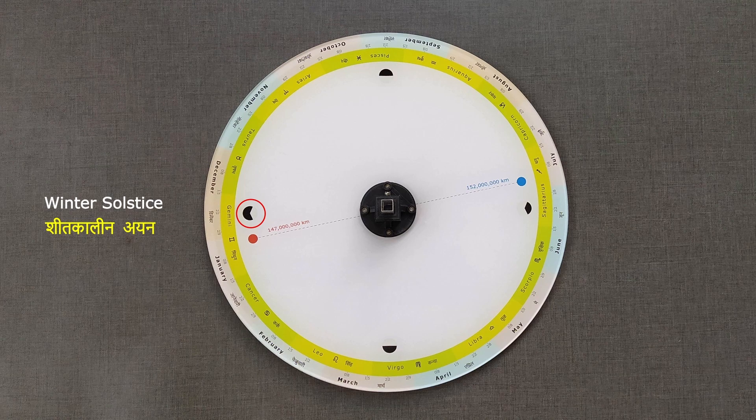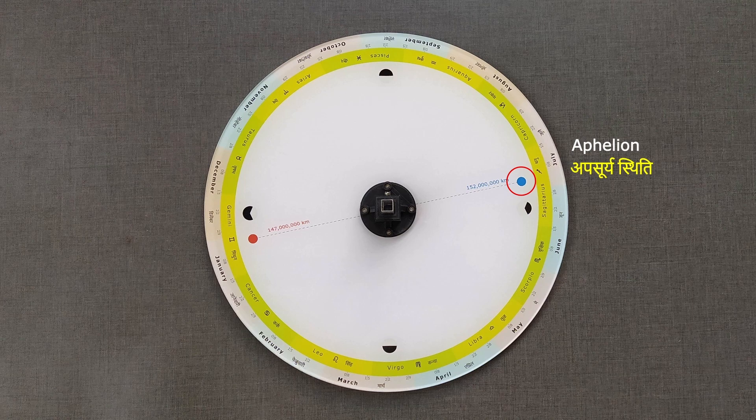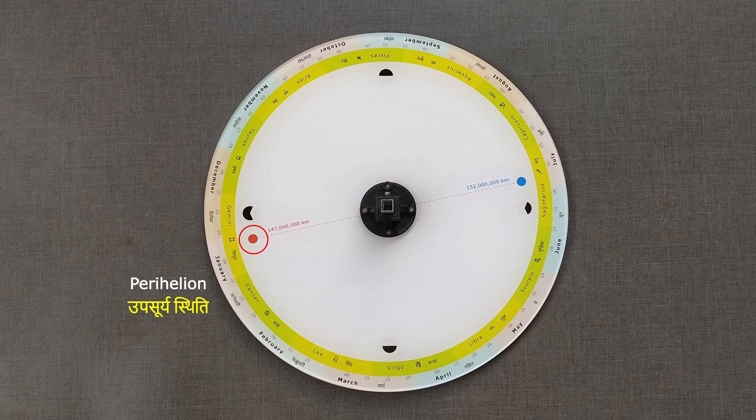This position denotes the winter solstice while this one summer solstice. Around 4th of July, Earth is farthest from the Sun in its orbit while it is nearer around 4th of January.